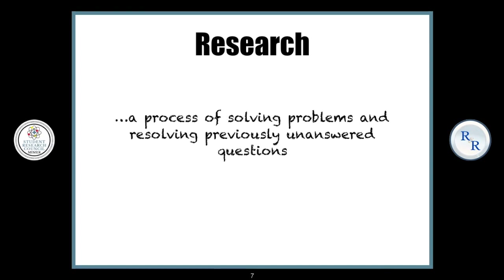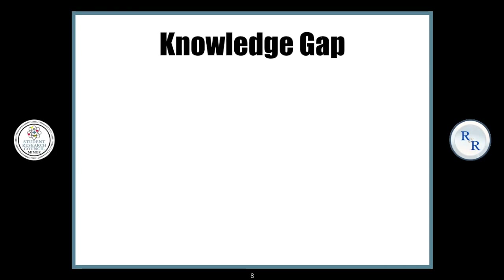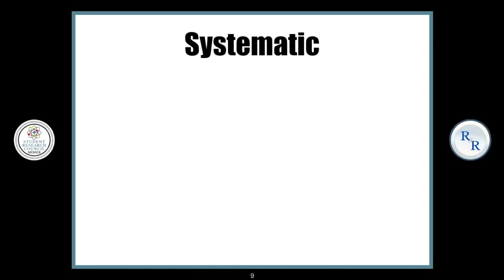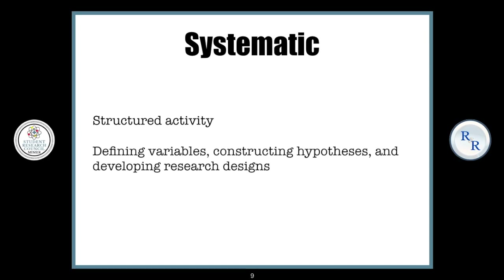Research can be defined as a process of solving problems and resolving previously unanswered questions. These previously unanswered questions are also known as a research gap or a knowledge gap, which can further lead to a research question. But this process needs to be systematic — it needs to be a structured activity that has things like defining variables, constructing hypotheses, and developing research designs.